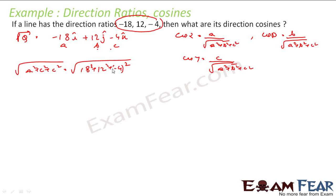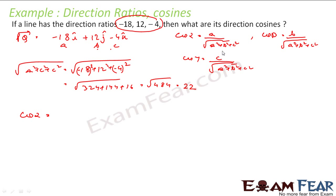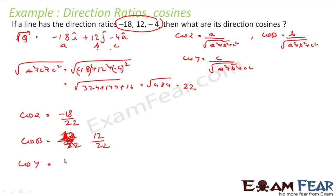First let me find √(a² + b² + c²), because that is required everywhere. That is √(18² + 12² + 4²) = √(324 + 144 + 16) = √484 = 22. So cos α = −18/22, cos β = 12/22, and cos γ = −4/22. These are my direction cosines.